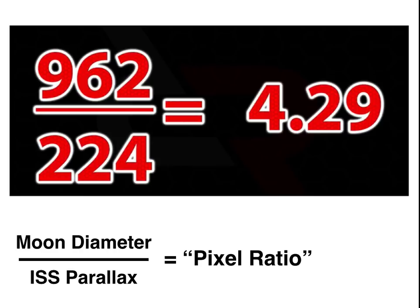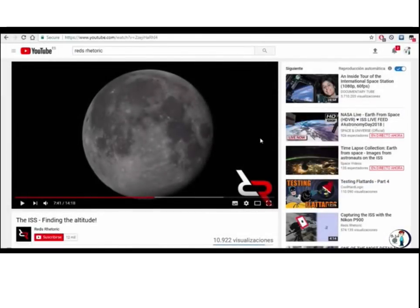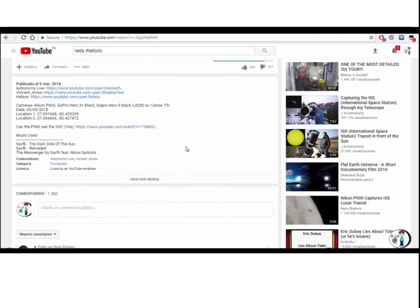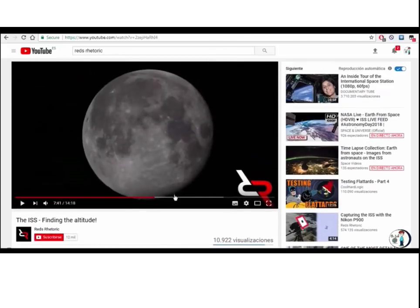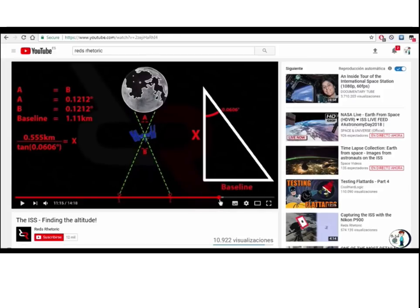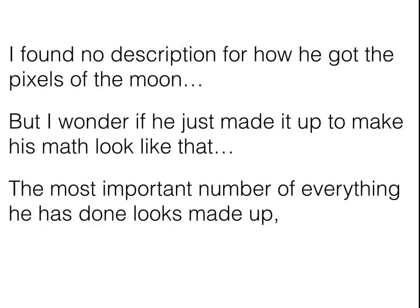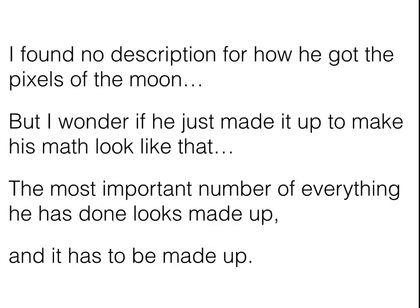Point number three: Red may have made up the pixel ratio. What is this pixel ratio? It's the moon's diameter divided by the ISS parallax, which Red calculated to be 4.29. 'I looked up the pixels in his links but I found no description of how he got the pixels of the moon, so I can't judge that, but I wonder if he just made it up to make his math look accurate.' And then: 'The most important number of everything he has done looks made up and it has to be made up.'